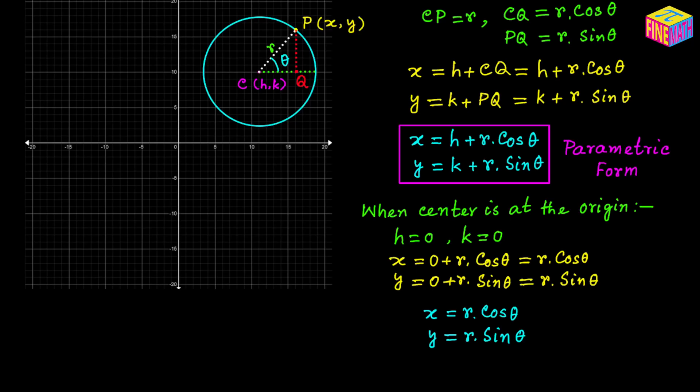If we summarize it, x is equal to R times cosine of theta and y is equal to R times sine of theta. This set of equations together is called the parametric form of equation of circle when the circle center is located at the origin.